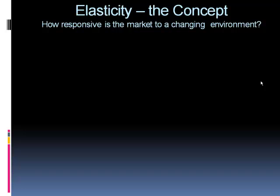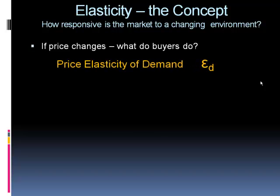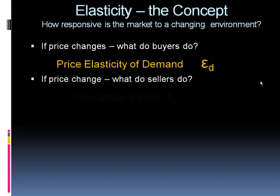Our first major elasticity we're going to look at in good depth is examining the effect of price on buyers — if price changes, how do buyers behave? We measure this as the price elasticity of demand, symbolized as E sub D. Our second elasticity is the effect of prices on seller behavior: the price elasticity of supply. If prices go up, we know sellers will be inclined to produce more, and we're just going to try to measure how much more.